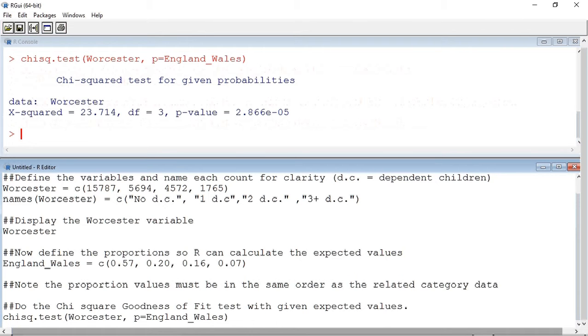We can see from the R console that we have a P value of 2.866 times 10 to the minus 5.